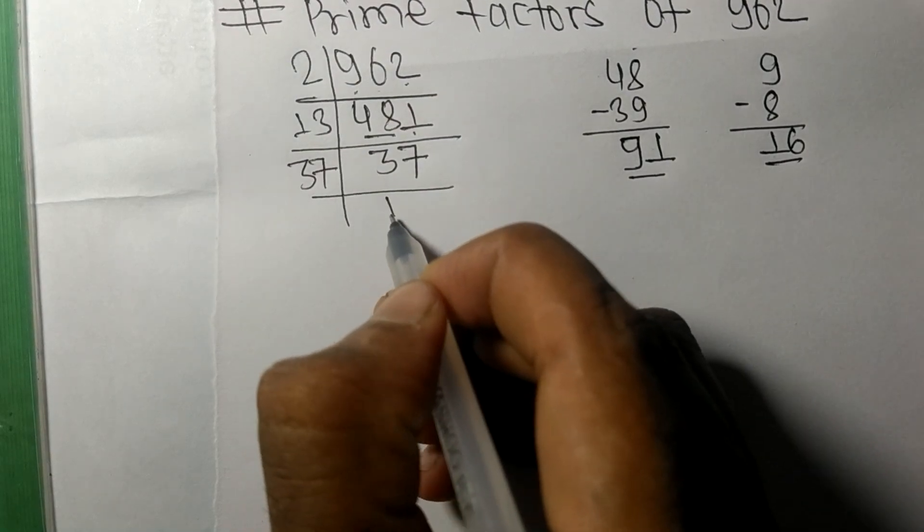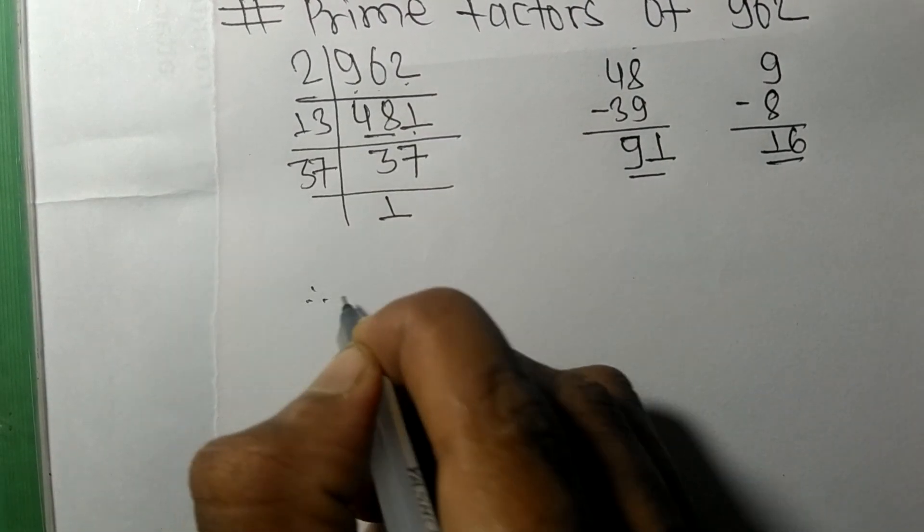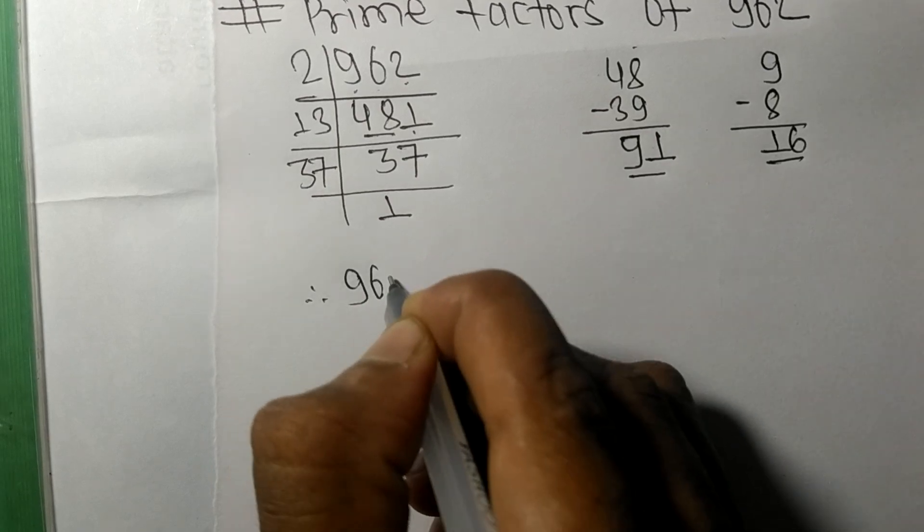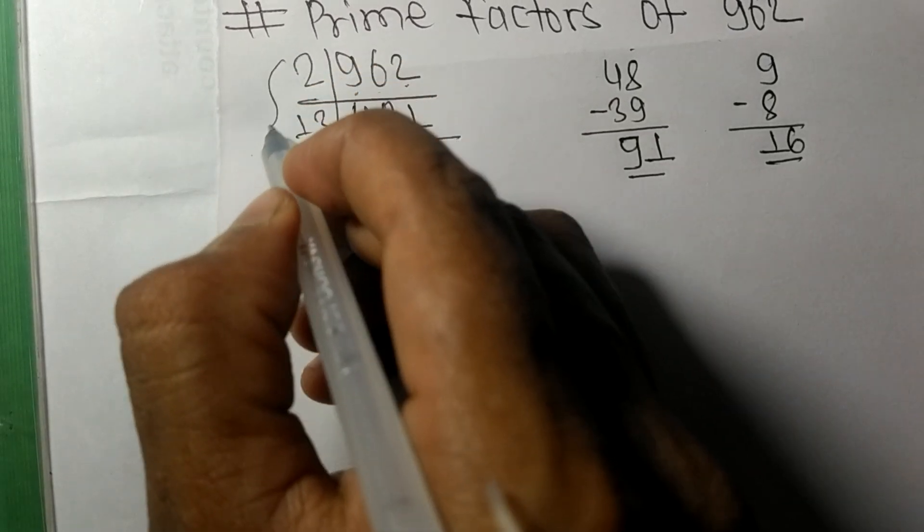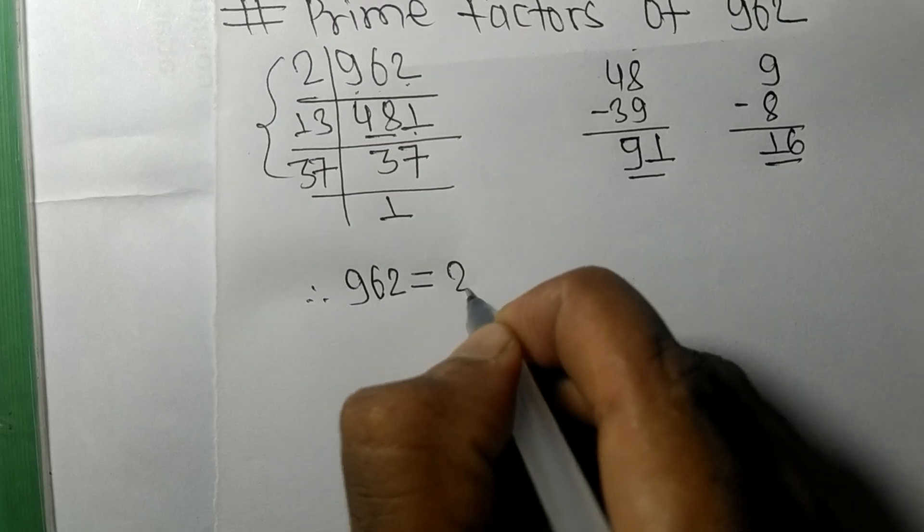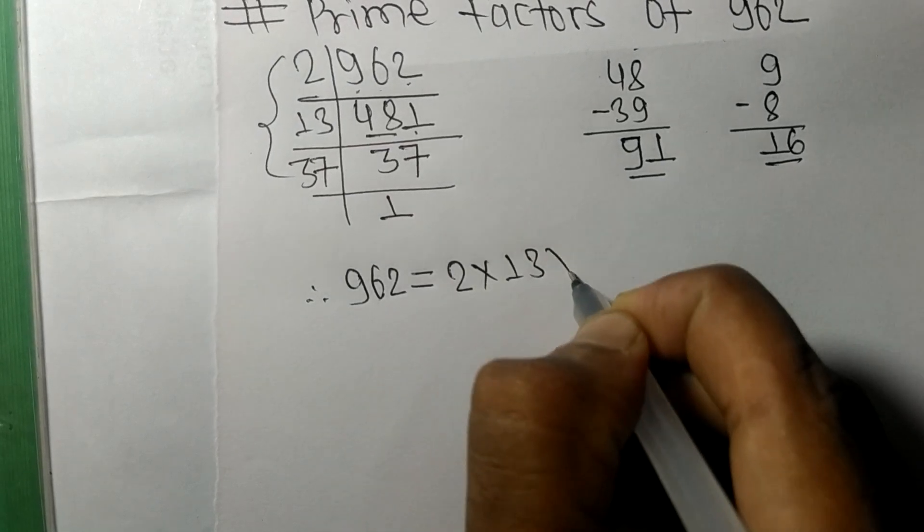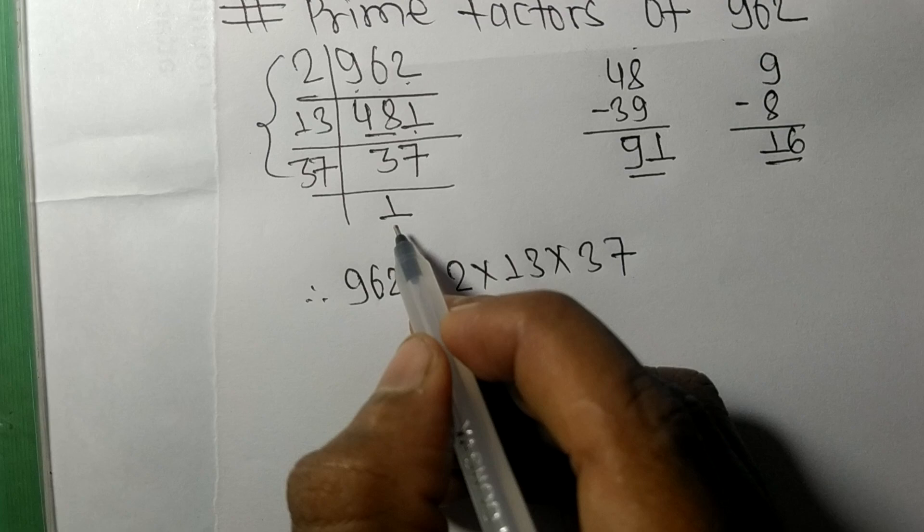Therefore, 962 equals, from this side, 2 times 13 times 37.